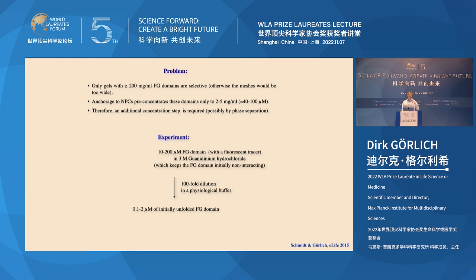At this point we had one problem: we observed extreme selectivity of the FG hydrogel only when the local protein concentration exceeded a threshold of 200 milligrams per milliliter — a very high concentration, close to that expected in a protein crystal. If the concentration is lower, the meshes get wider and we lose selectivity. The FG repeat domains are anchored at nuclear pore complexes, but anchoring alone would only concentrate them to about five milligrams per milliliter — far below the threshold. Therefore an additional concentration step is required.